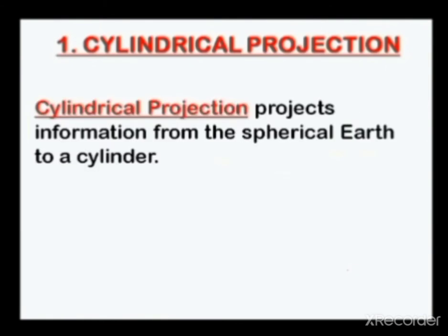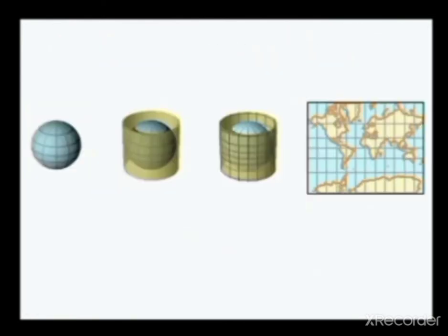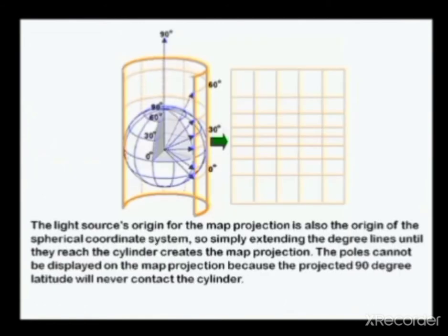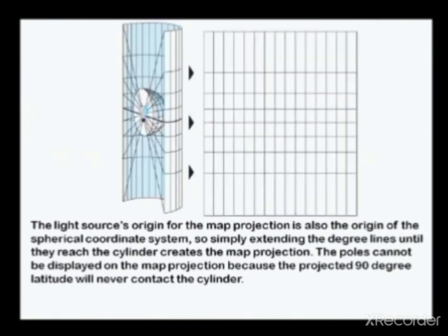A Mercator chart is a cylindrical projection. It projects information from a spherical earth onto a cylinder. That is a cylindrical projection. However, in a cylindrical projection, the distortion is — at the equator, the distance of your latitude lines are equal.